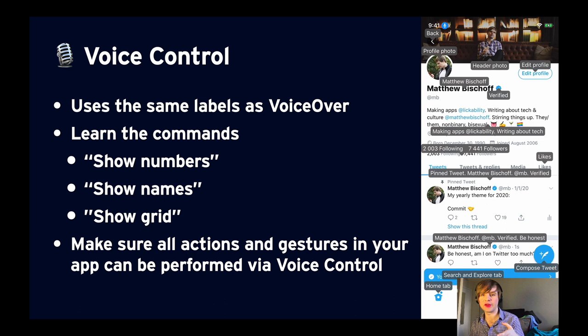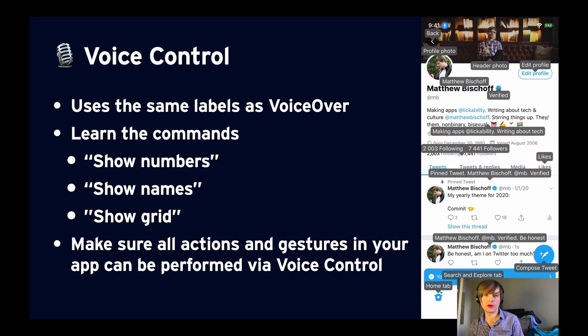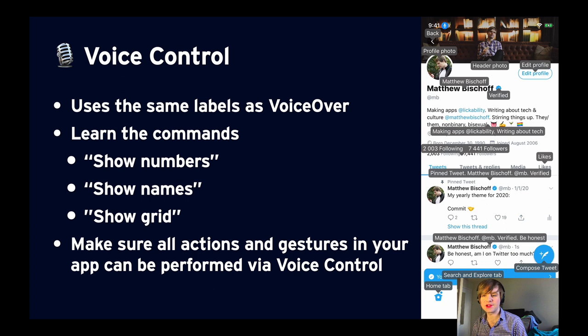Voice control labels use the exact same labels as VoiceOver. So if you have great VoiceOver support, you're going to have great voice control support in most cases. When you audit this, learn the commands — you can say things like 'show numbers' to show a grid of numbers, 'show names' to switch back to names, or 'show grid.' iOS has a really great built-in tutorial for voice control. Just make sure that all actions and gestures in your app can be performed via voice control — no special APIs, just use the same APIs as VoiceOver.